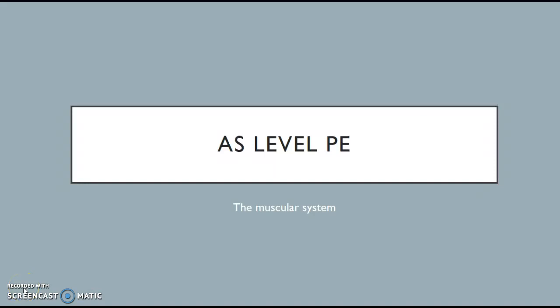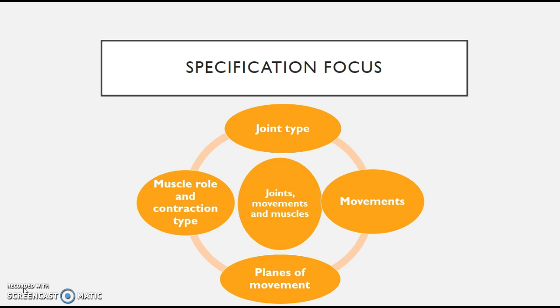Hello guys, welcome to ASP screencast on the muscular system for anatomy and physiology. We have a look at the unit so far. We're in this situation now where we're looking at joint types. Following that we looked at movements at joints. Then we looked at the planes of movements. Now what we're looking at finally is to sew up the unit where it's got joints, muscles and movements. We now need to have a look at the muscles that cause all these movements to take place.